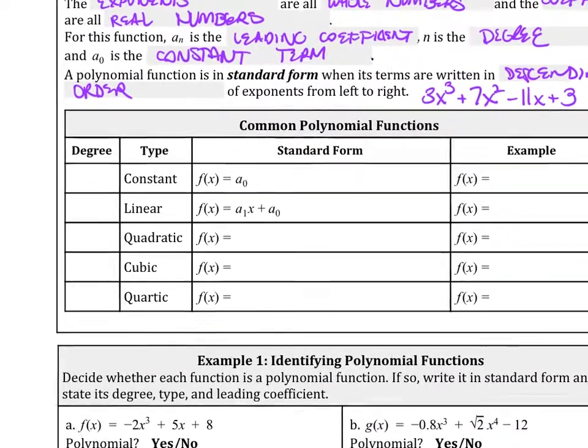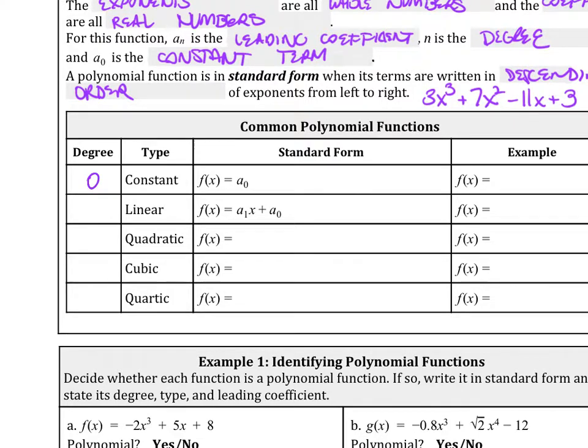So common polynomial functions, let's look at degree 0, that's our constant. So an example of that is negative 14, a number, no variable.